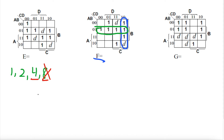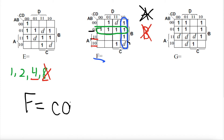So let's go look at our equation F and do the blue circle first. We know that A is 1 for the third row but A is 0 for the second row, so A is not consistent. B is 0 for the fourth row and B is 1 for the third row, so B is not consistent. But C and D are consistent for the blue circle — C is 1 throughout this whole column and D is 0 throughout this whole column. So our first equation is C and D̄.